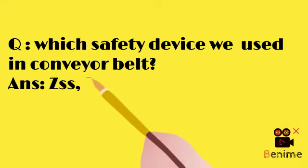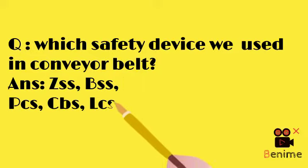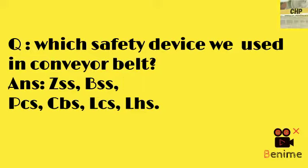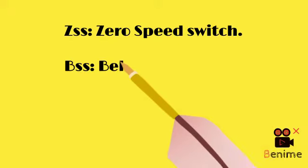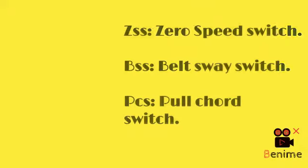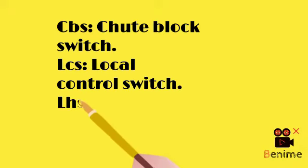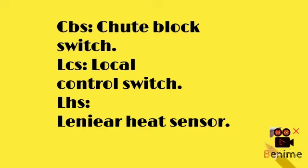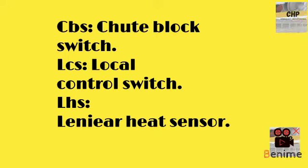The safety devices used in conveyor belts are: ZSS — zero speed switch; BSS — beltway switch; PCS — pull-cord switch; CBS — chute-block switch; LCS — local control switch; and LHS — linear heat sensor. These are all the safety devices which we generally use in conveyor belts.